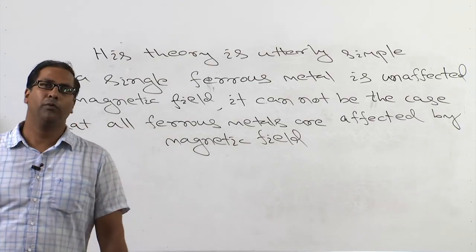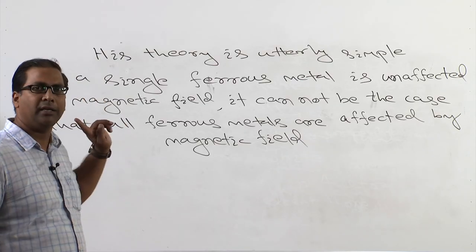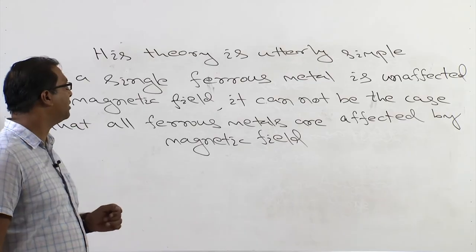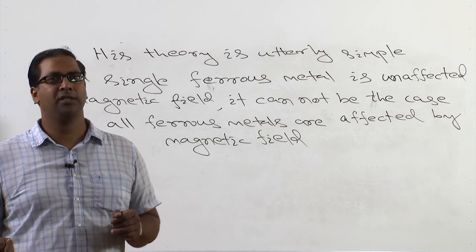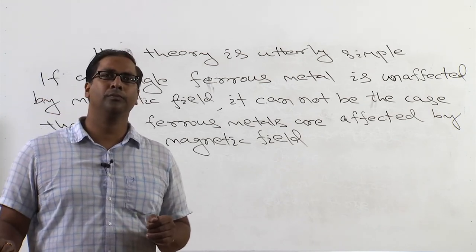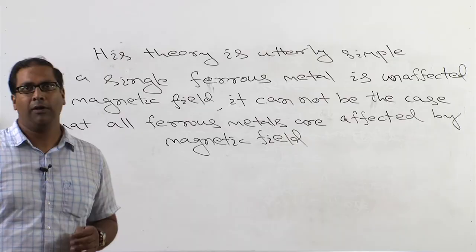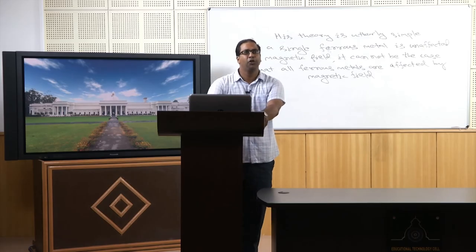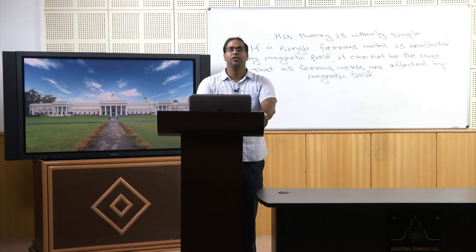His theory is quite simple: if a single ferrous metal is unaffected by a magnetic field, it cannot be the case that all ferrous metals are affected by a magnetic field. One single instance is sufficient to disprove a theory — to falsify it. He was a strong proponent of the falsification theory, and used that theory of falsification to demarcate between science and non-science, science and pseudo-science.